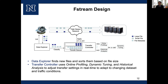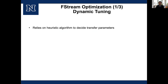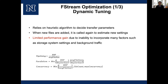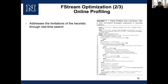FC Stream uses three components — online profiling, dynamic tuning, and historical analysis — to predict these parameters. Dynamic tuning predicts all three parameters, while online profiling and historical analysis predict only concurrency. Dynamic tuning relies on a heuristics algorithm using characteristics of data and the network to predict parameter values. When new files are added, average file size is one metric that changes over time, and it adapts to find new values for transfer settings. However, the performance gain from dynamic tuning is limited because it is unable to incorporate many factors that play a significant role in achieved performance, such as storage system settings or background traffic.